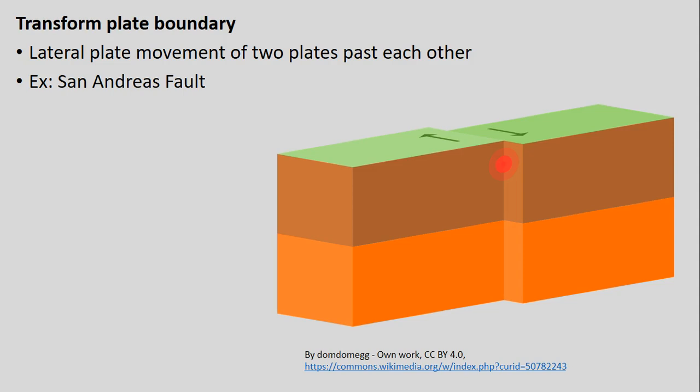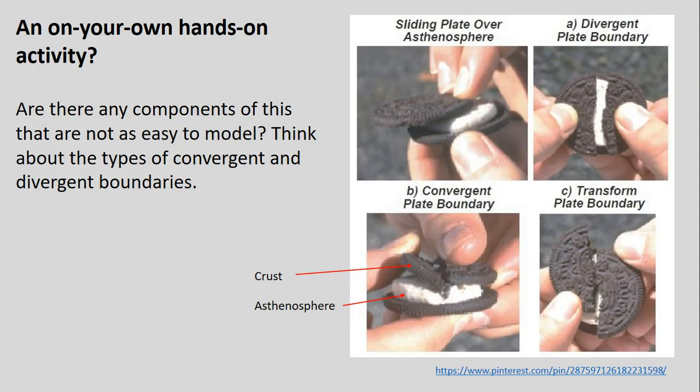The third type of plate boundary is the transform plate boundary, where two plates laterally slide past each other. An example we'll revisit in the earthquakes lecture is the San Andreas Fault. For a hands-on activity to help keep all three types of boundaries straight, you can use Oreos — not sponsored — as shown in the images here.